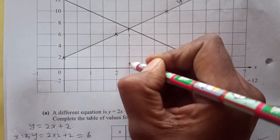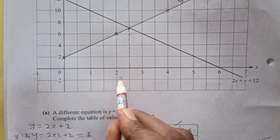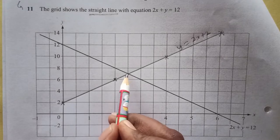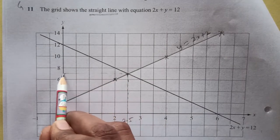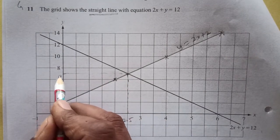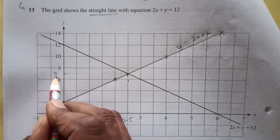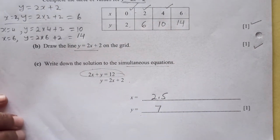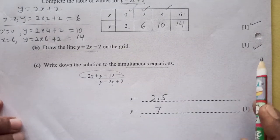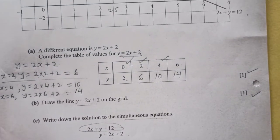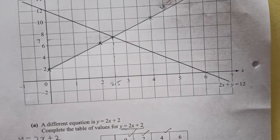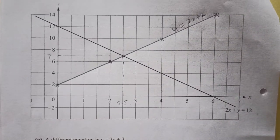Going down from the intersecting point, the value of x is between 2 and 3, so x is 2.5. And the y value is in the middle of 6 and 8, so y is 7. So the solution is x = 2.5, y = 7. We've collected 3 marks by doing this on the graph.